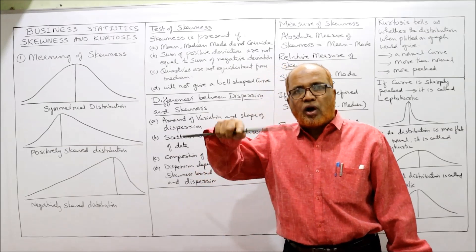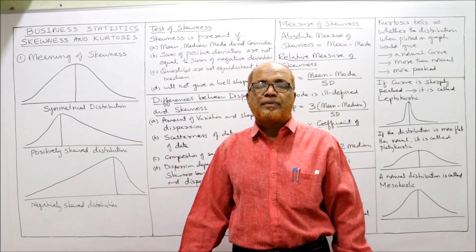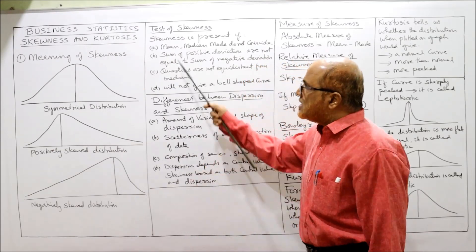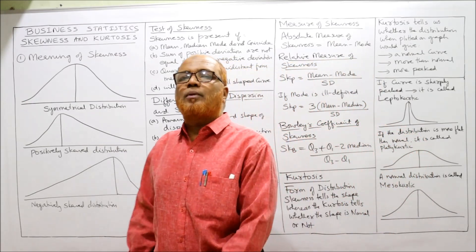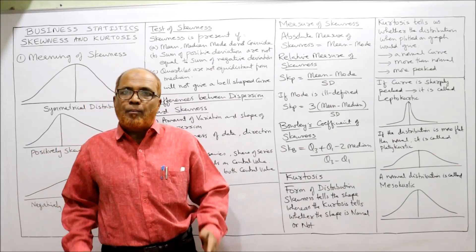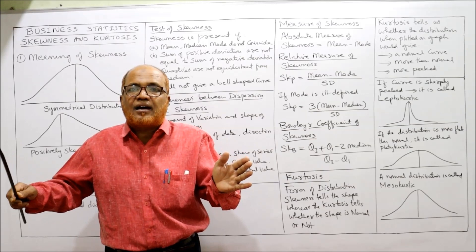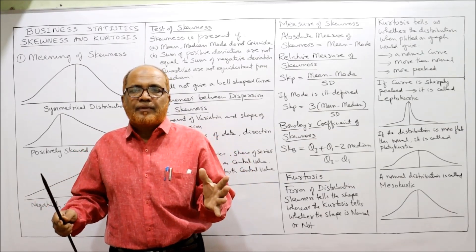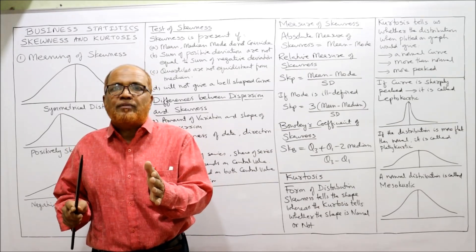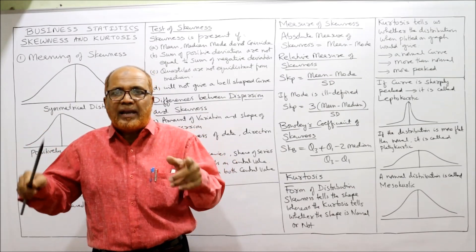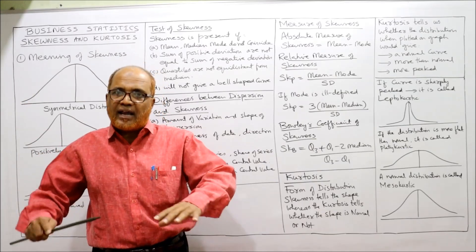Fourth test: the data will not give a bell-shaped curve. If you draw the curve on graph paper and it is bell-shaped, it is symmetrical; if it is not bell-shaped, the data is asymmetrical or skewed. These are the tests to find out whether the data is skewed or not. Now, regarding the differences between dispersion and skewness — both are statistical techniques. Dispersion explains how the values are scattered around the mean, whereas skewness is concerned only with the shape of the distribution — whether it is bell-shaped or not.